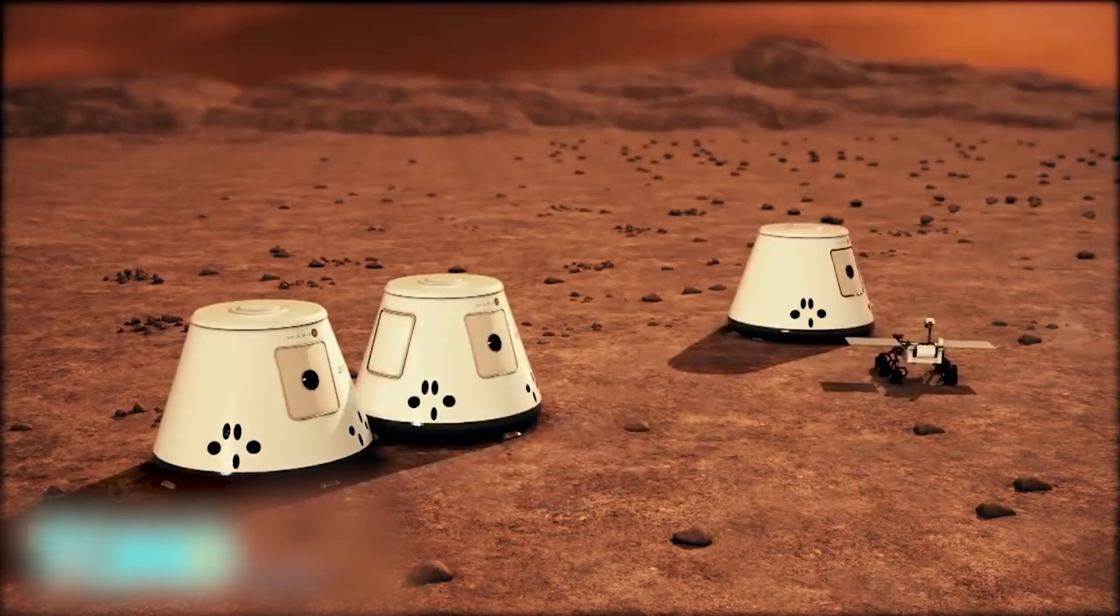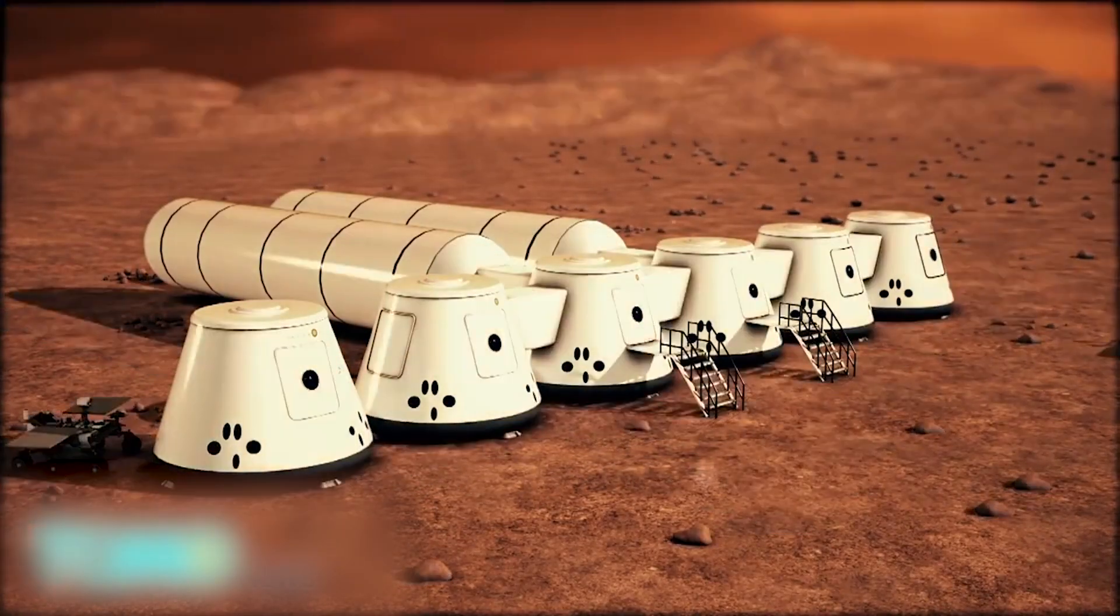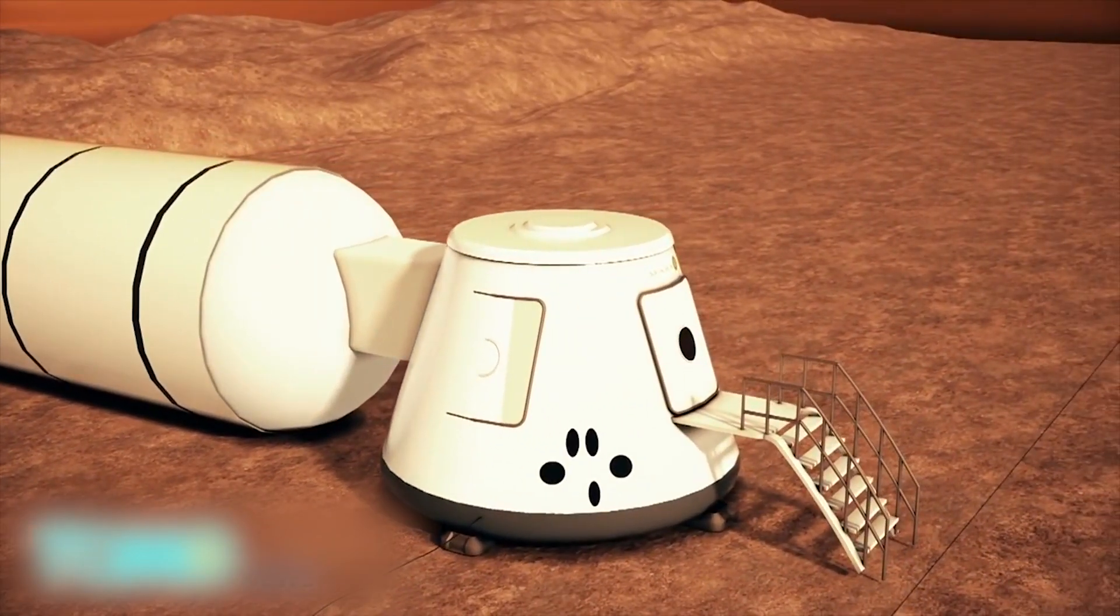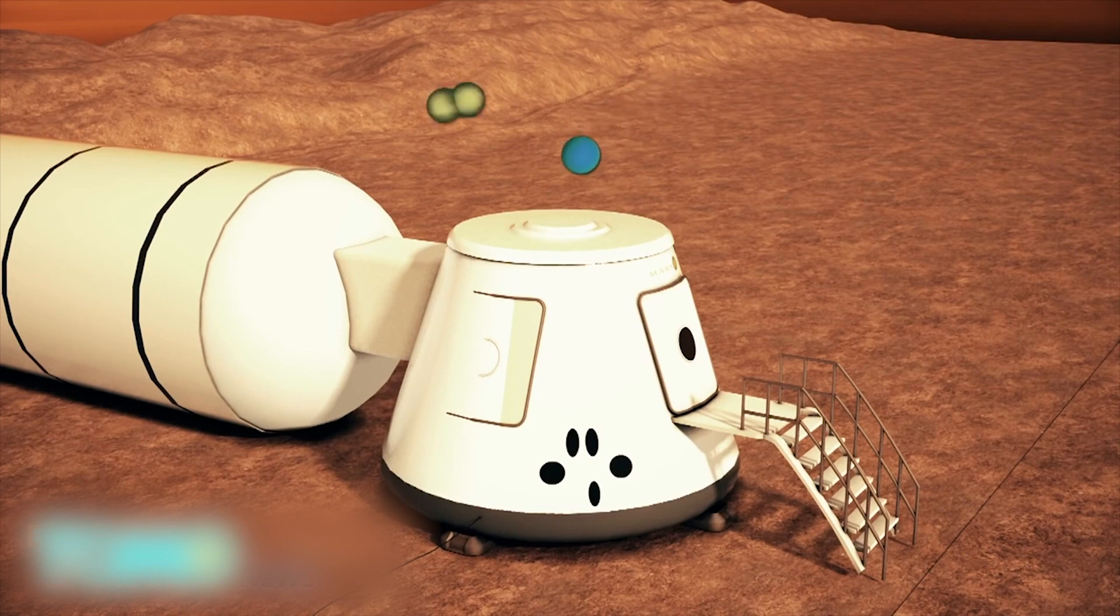Additional units will arrive and be constructed as new teams join the colony. Attached to the living unit is the environmental control and life support system. The system will feed nitrogen and argon gas extracted from Mars' atmosphere into the habitable space as inert gases.